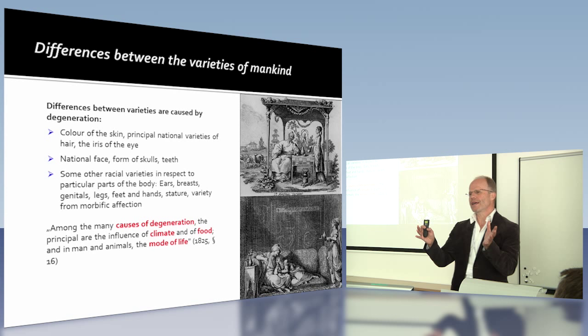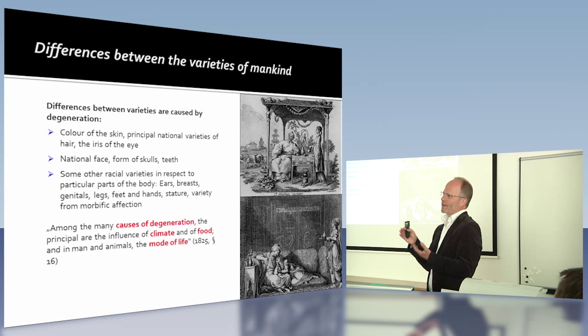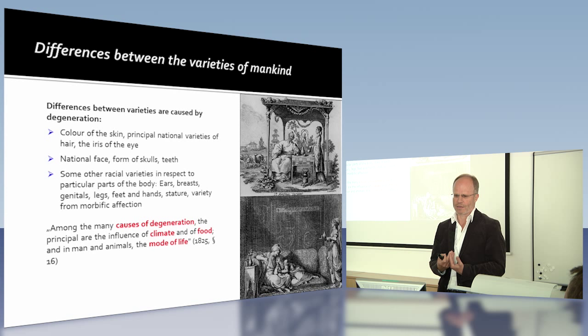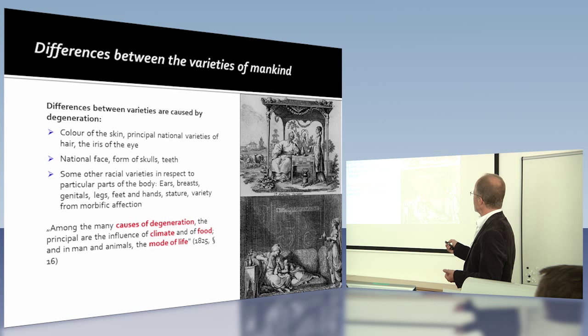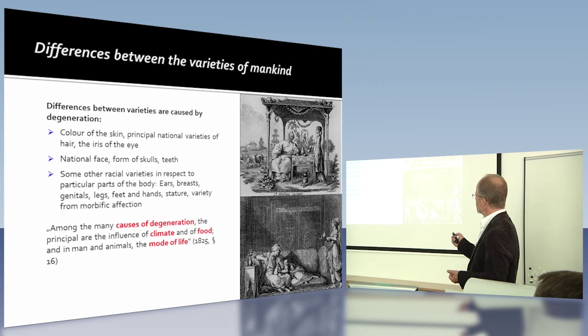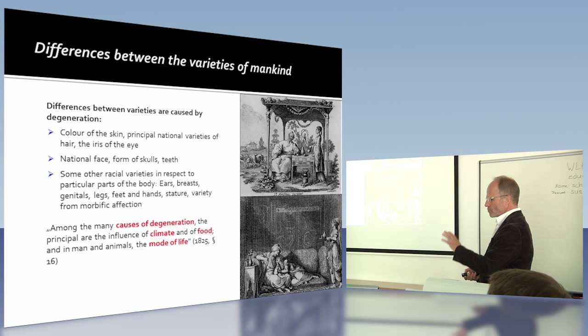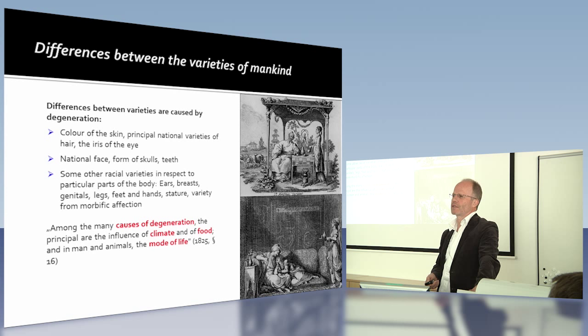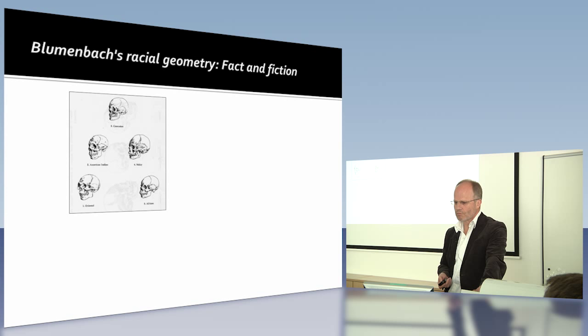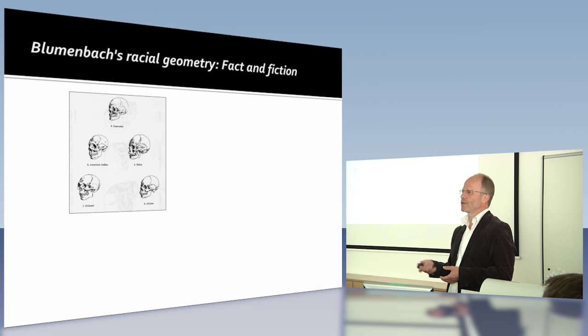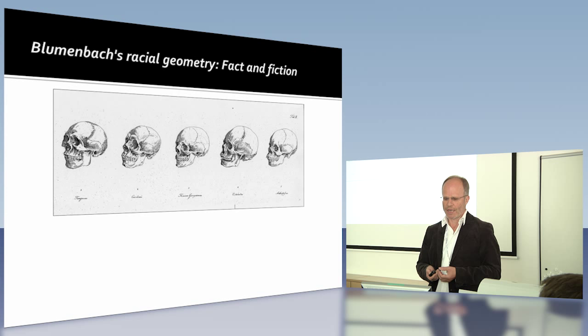In the end he comes to the conclusion that all these minor differences can be traced back to degeneration based on climate and food — this is basically Buffon's argument of degeneration. So if you look at Blumenbach's idea, you can clearly see this does not represent what Gould thinks. The actual illustration shows not a hierarchical but an egalitarian ordering.